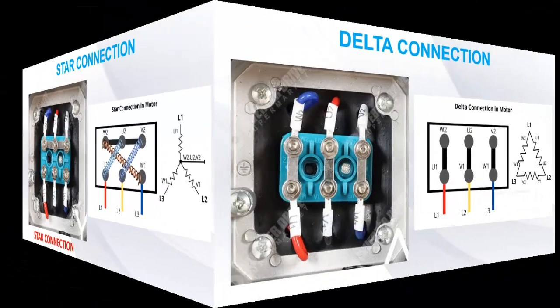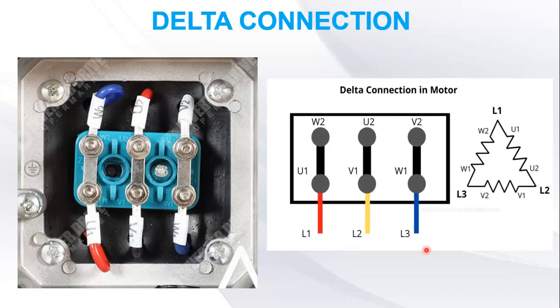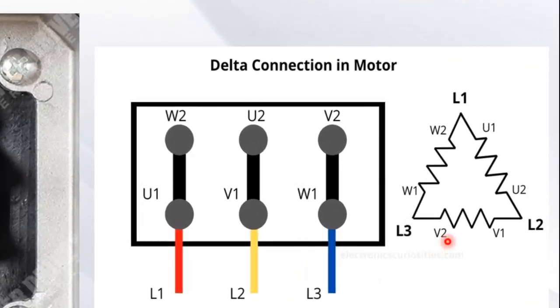Now let's see how motor can be connected in delta configuration. In this drawing, again three sets of windings are connected in delta, in which one end of one winding is connected to one end of second winding. Remember, always connect W2 with U1, U2 with V1, V2 with W1.